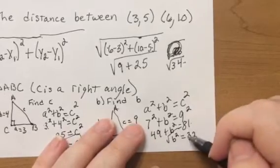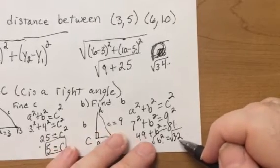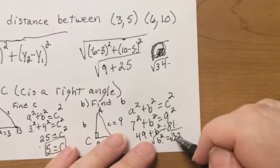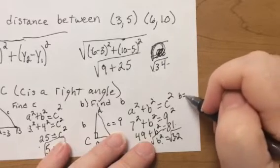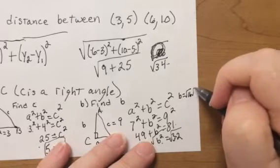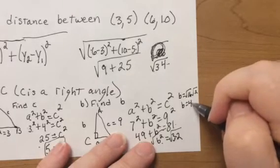So, if you square root both sides, again, it's not plus or minus because this is a distance. Now, I do believe 32 is 16 times 2. So, it would be 16 times 2. So, it would be 4 square root of 2.